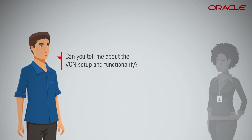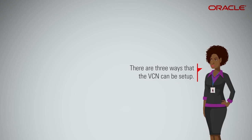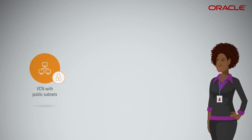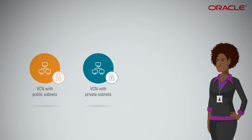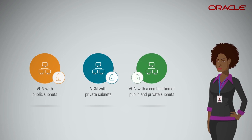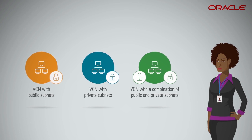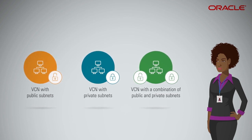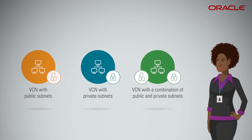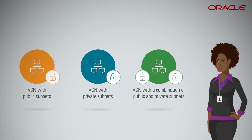Can you tell me about the VCN setup and functionality? There are three ways that the VCN can be set up: VCN with public subnets, VCN with private subnets with connectivity to on-premises network, and VCN with a combination of public and private subnets with connectivity to on-premises network. Let's look at an example of the third scenario, where the VCN is set up with both public and private subnets. To use this scenario, you must have a network administrator configure the router at your end of the IPsec VPN.